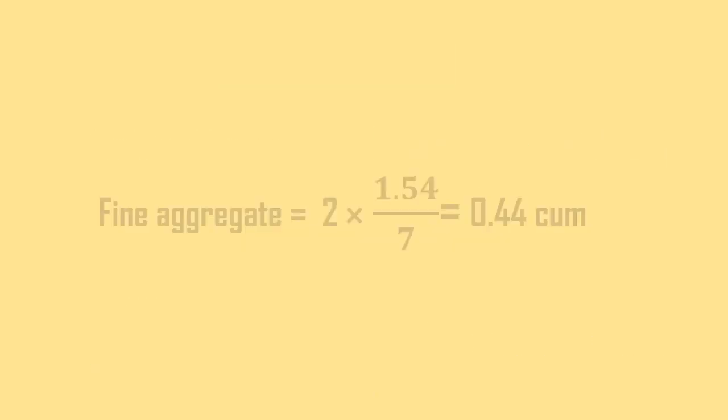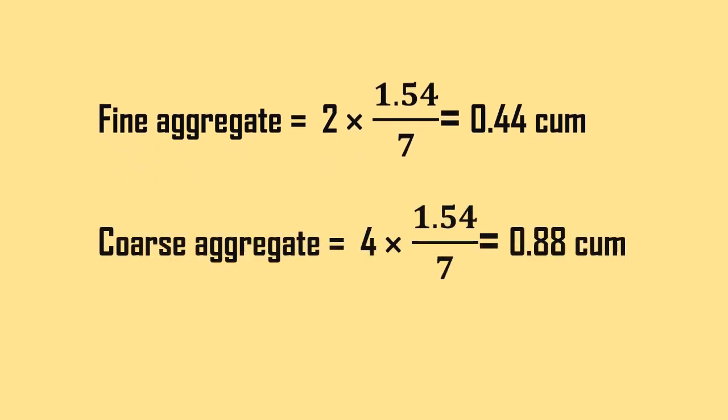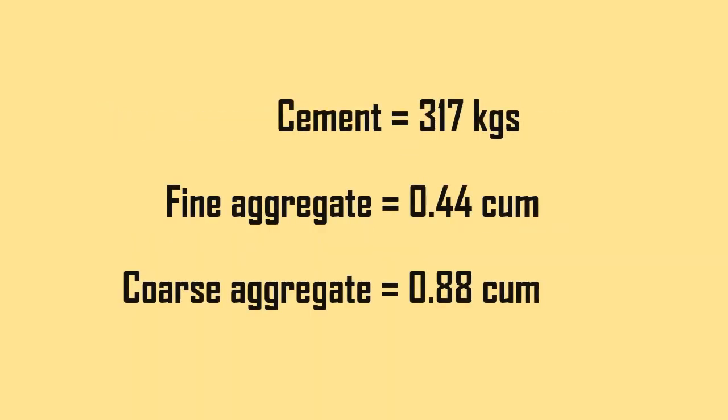Fine aggregate will be equal to 2 × 1.54 ÷ 7 = 0.44 cubic meters. Coarse aggregate will be 4 × 1.54 ÷ 7 = 0.88 cubic meters. Thus, the quantities of cement and aggregates for 1 meter cubic of concrete are: cement 317 kg, fine aggregate 0.44 cubic meters, and coarse aggregate 0.88 cubic meters.